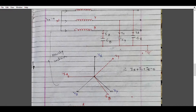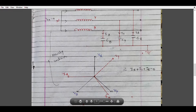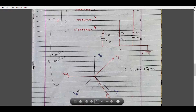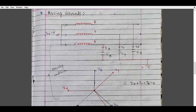The current will lead the voltage by 90 degrees, so we can say Ir leads voltage Vr by 90 degrees. Similarly, Iy and Ib lead Vy and Vb by 90 degrees. We are assuming this is a healthy condition, and that is why Ir + Iy + Ib = 0, and the voltage at the neutral will also be zero.